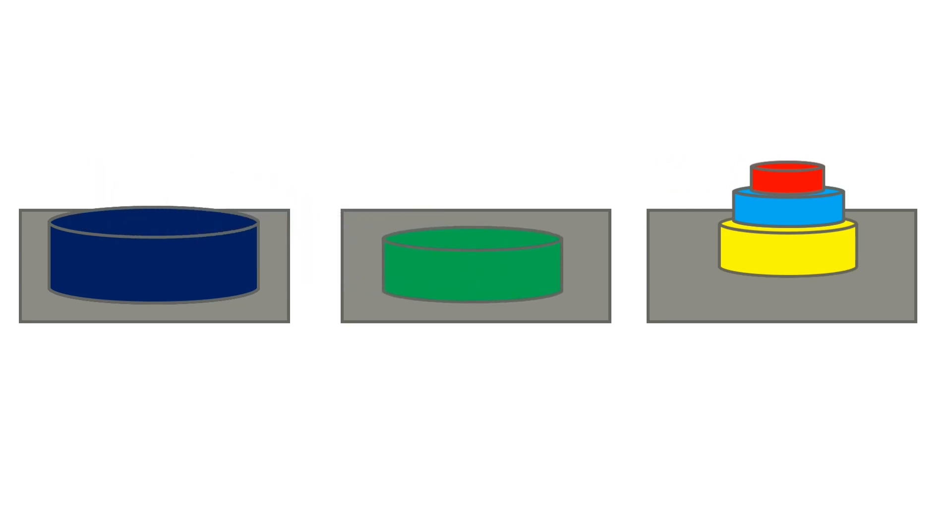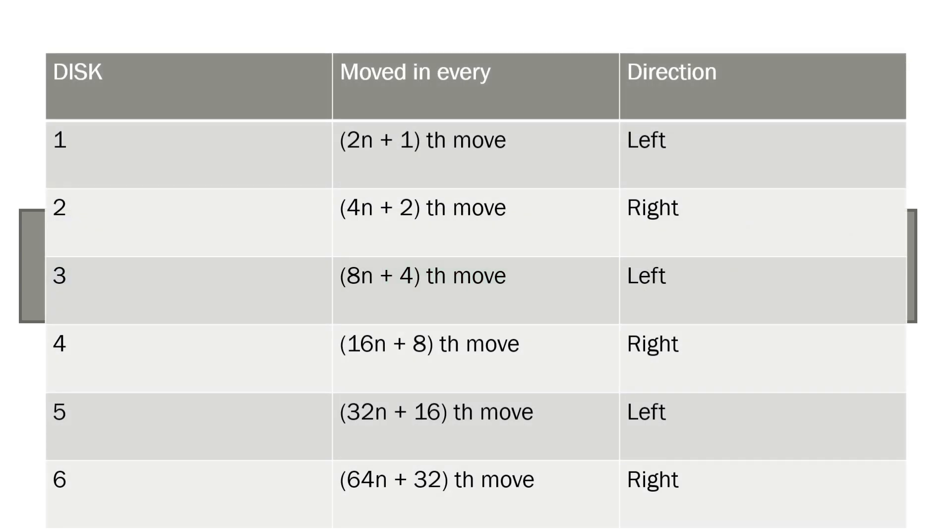If we keep going on, then we can observe one more thing here. We can see that first disk is moved in every 2n plus 1th move in left direction. Second disk is moved in every 4n plus 2th move in right direction. Third disk is moved in every 8n plus 4th move in left direction and so on. So, with these observations also, we can keep going on and we can displace the stack in the optimal number of moves.